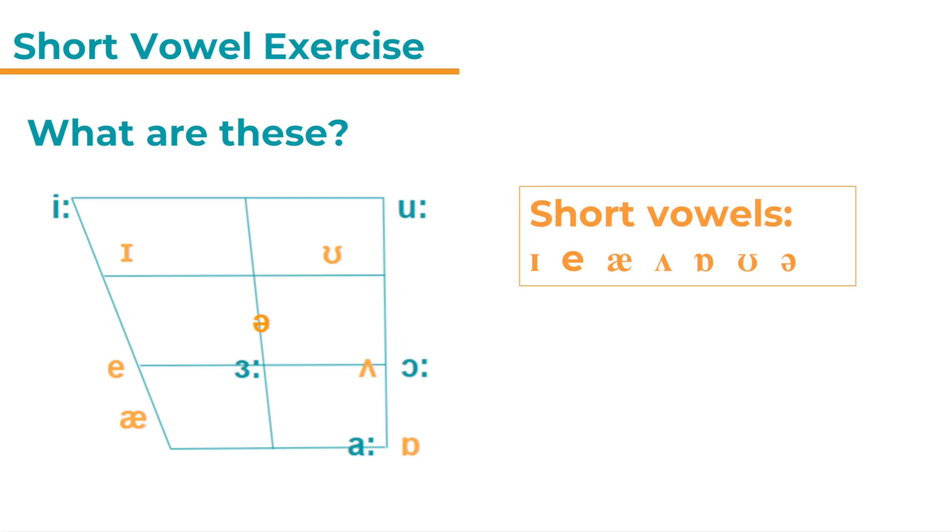All the orange sound symbols are for short vowels and you can see them also in the table: ɪ, e, æ, ʌ, ɒ, ʊ and ə, the schwa.